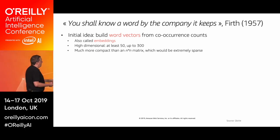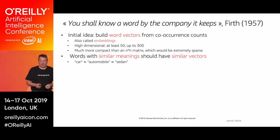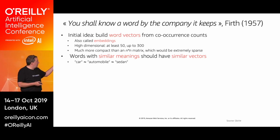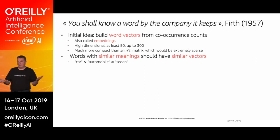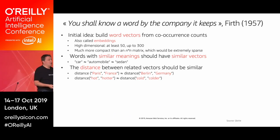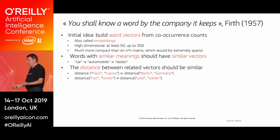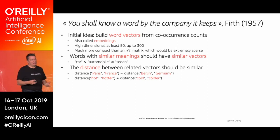The goal for those embeddings is that words with similar meaning and similar context should have similar vectors. So the vectors for 'car,' 'automobile,' and 'sedan' should be close to each other. And the distance between related vectors should be similar: the distance between the Paris vector and the France vector should be similar to the distance between Berlin and Germany, or London and UK. Hot/hotter and cold/colder should reflect the same concept — because if those word pairs illustrate the same relationship, it should be reflected in their vectors.